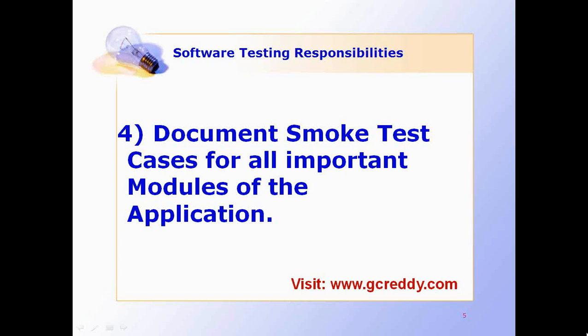Document smoke test cases for all important modules. We have some levels of test execution: first smoke testing, then after accepting the build, comprehensive testing, then defect reporting and tracking, then re-testing and regression testing, and finally final regression. Then close.